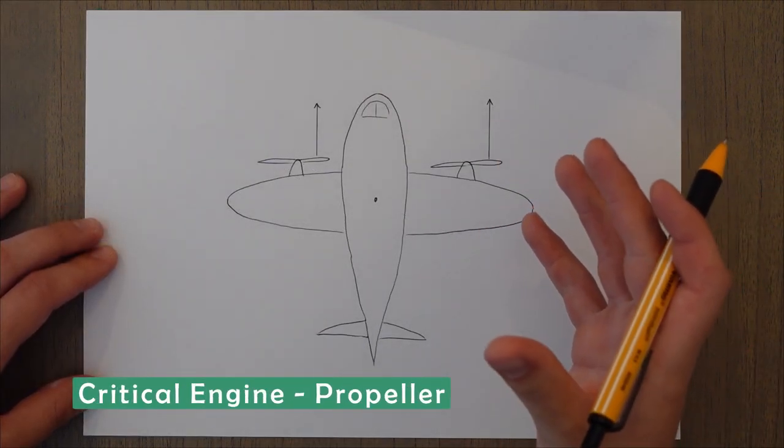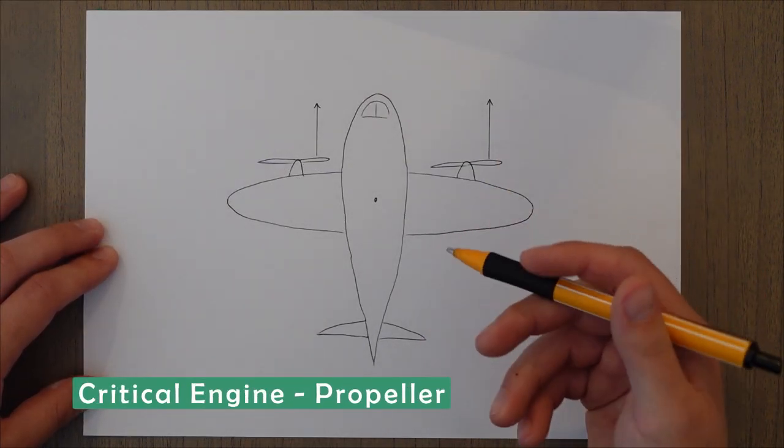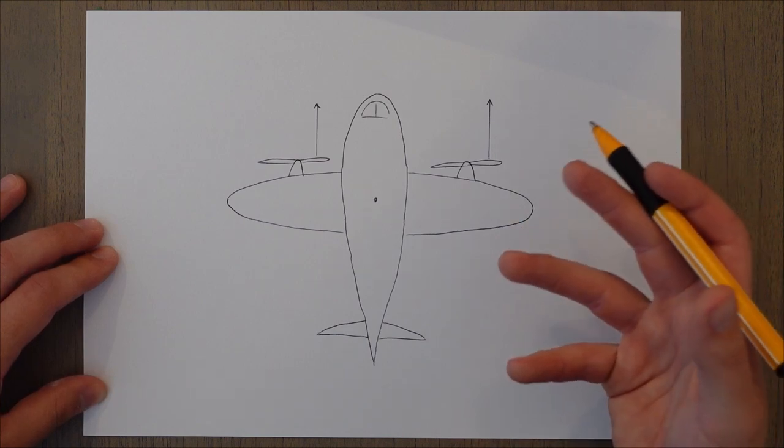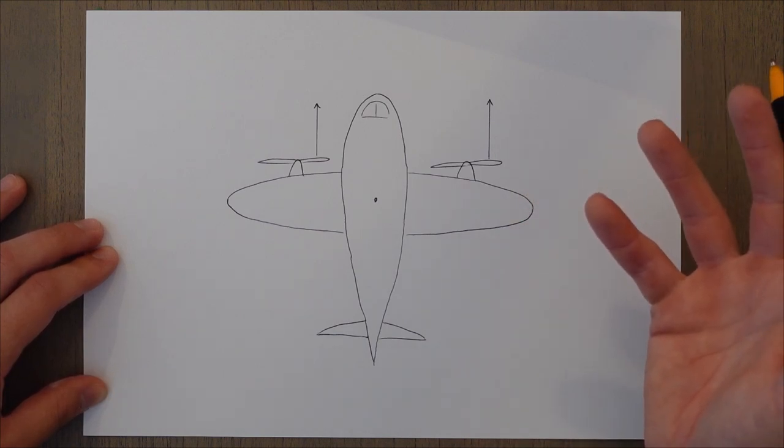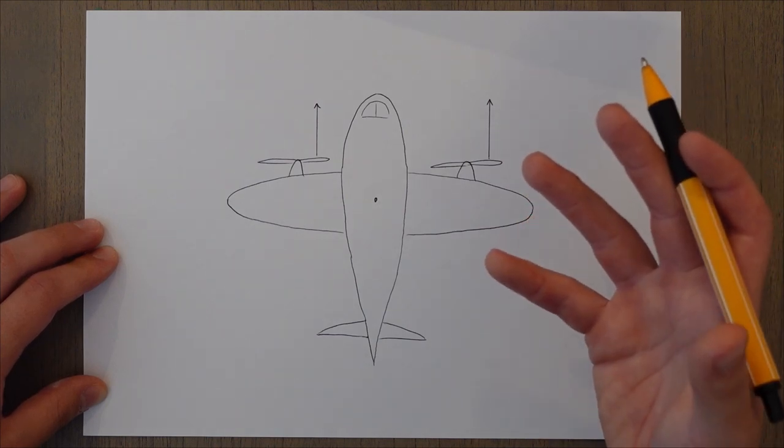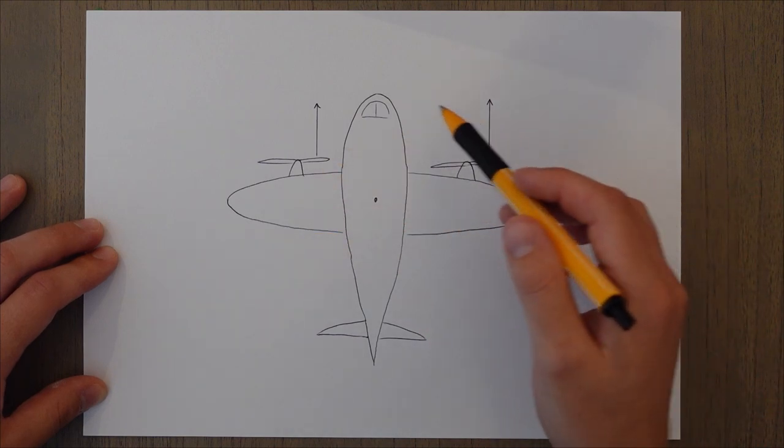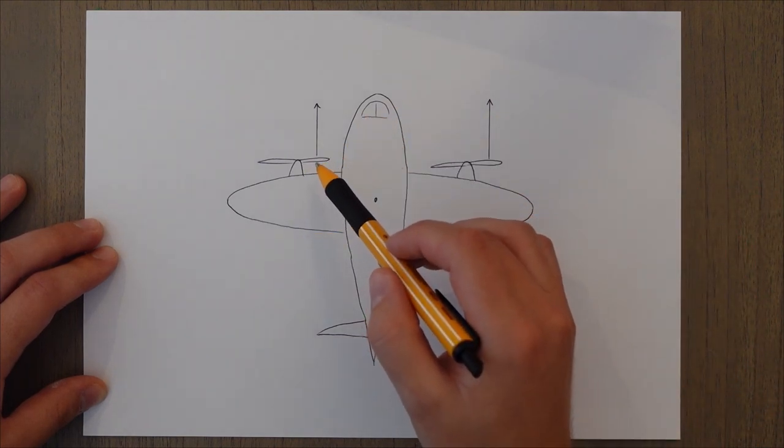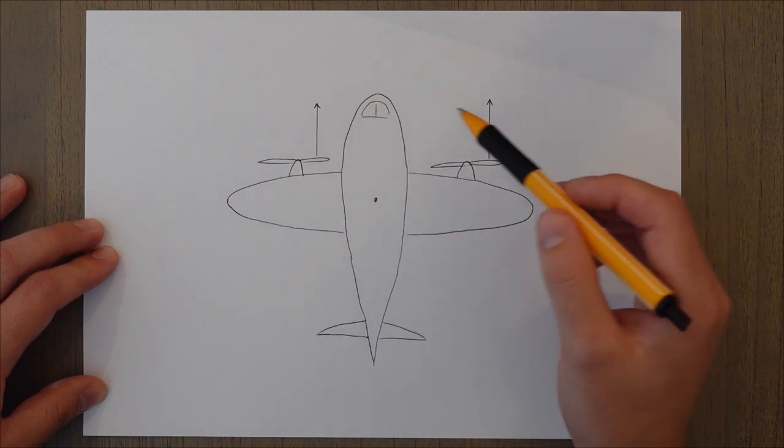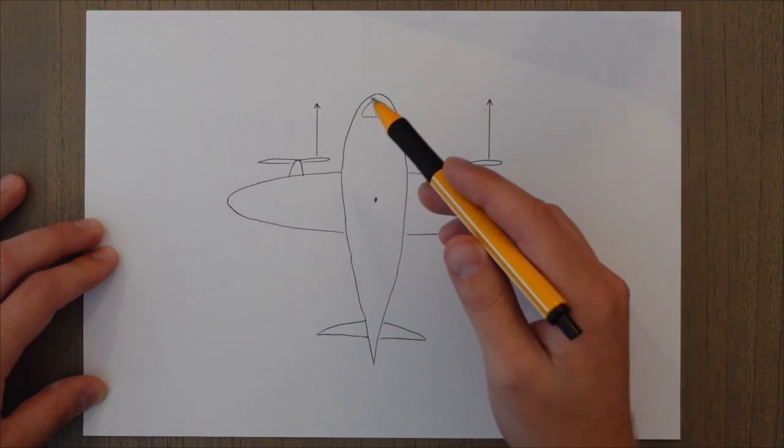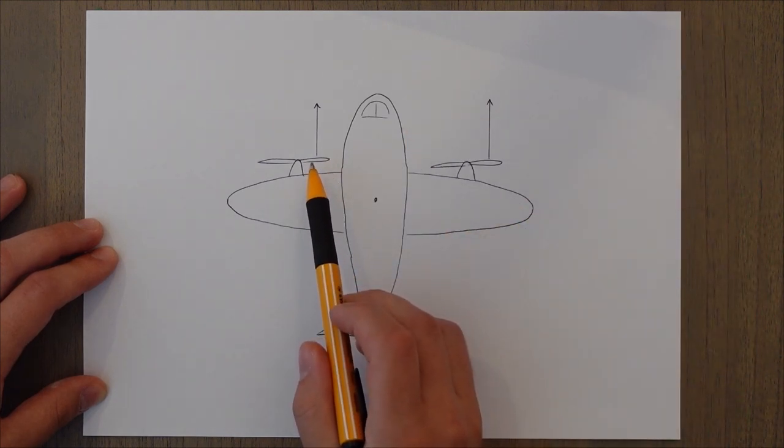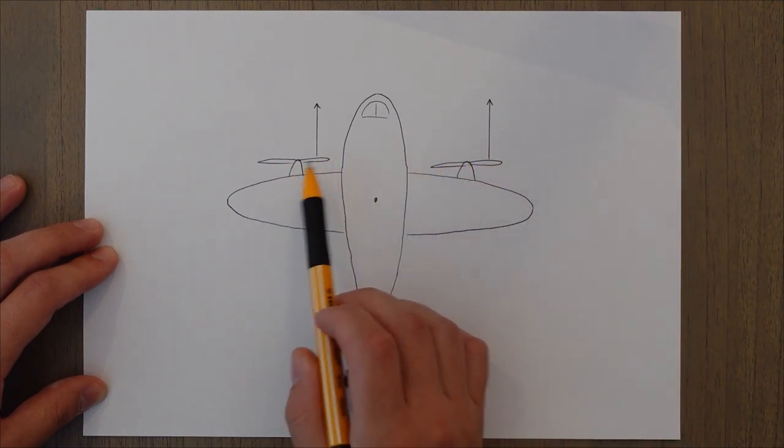The critical engine is the engine that if it were to fail, would cause the most control problems, usually during takeoff. Because this is the point when we have the most amount of thrust and we're going the slowest speed. In a twin propeller driven aircraft, the engine on the left is the critical one. This is because of the asymmetric blade effect when we're at high angles of attack. The asymmetric blade effect or the P factor means that the thrust of the propeller is pushed off to the right as so.